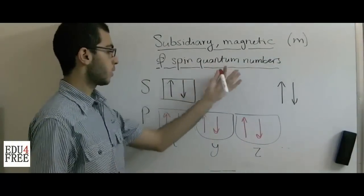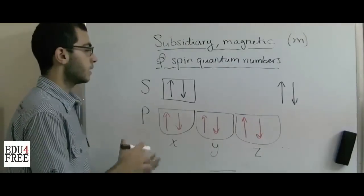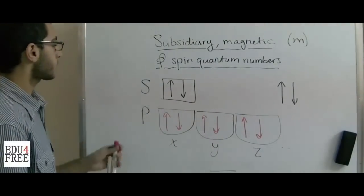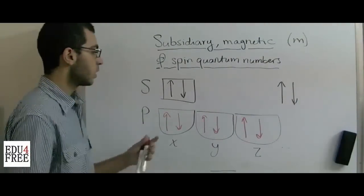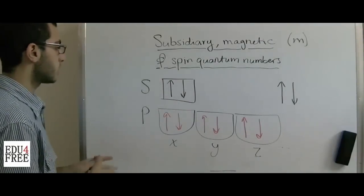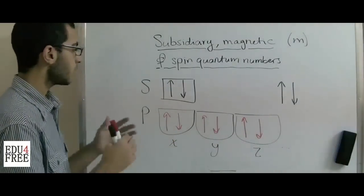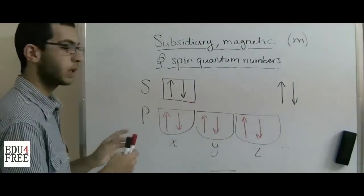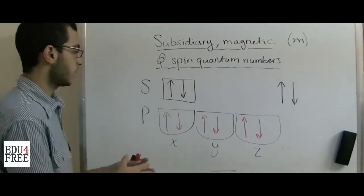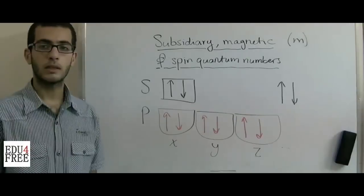This completes the spin quantum number. These are all four quantum numbers. Next time we will learn the relationship between all of these quantum numbers and how to distribute electrons inside an atom using our knowledge of quantum numbers. Thank you for watching, and see you next time.